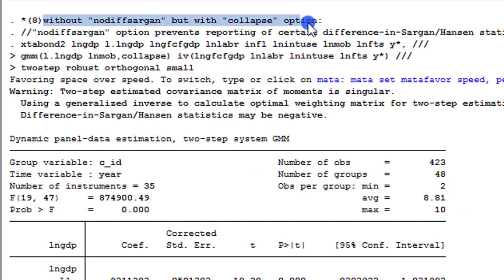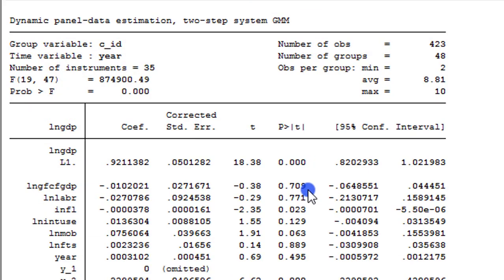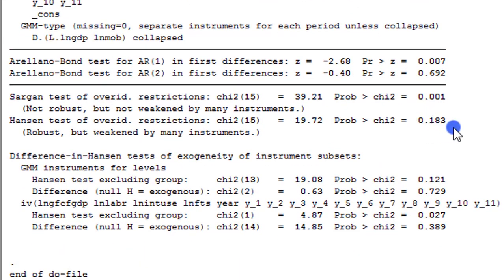Simulation 8 without no-diff-sargan but now with the collapse option. So using the collapse option, I'm very sure this result will be better. I have reduced instruments. Aside the lagged dependent variable, I can see that two of my regressors are significant, which is good. Scroll it down to Hansen. This is good at 0.183. And because I removed the no-diff-sargan, it means I'm interested in this statistic. So whenever you are interested in the difference-in-Hansen statistic, do not indicate the no-diff-sargan among your option sets.